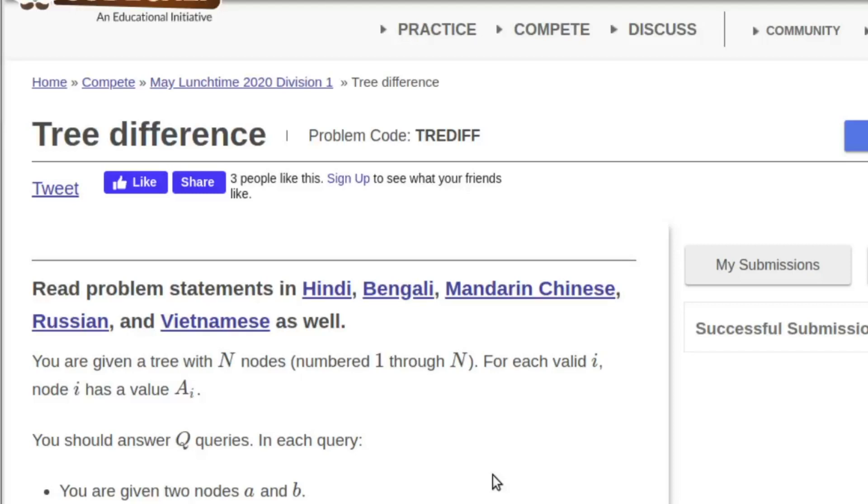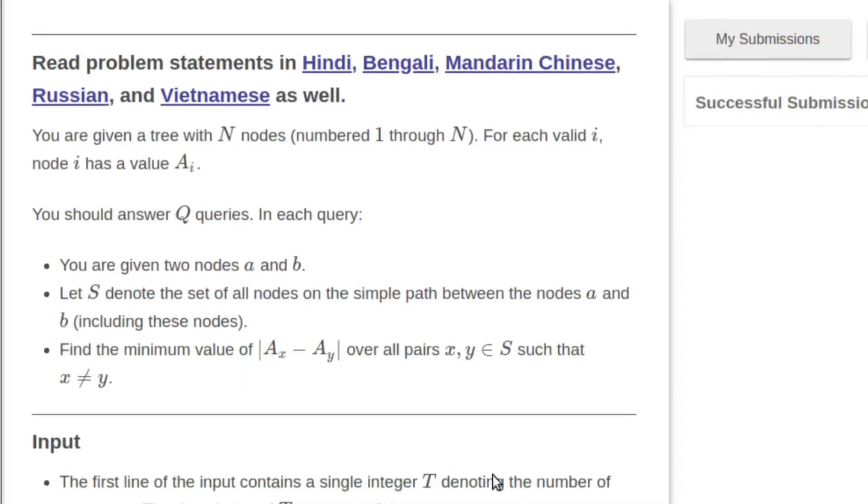Hello guys, this is Asha Ram and in this video I will discuss the solution of the Tree Difference problem from CodeChef May Lunchtime 2020. In this problem we are given a tree with n nodes numbered from 1 to n, and for each valid i, node i has a value ai.